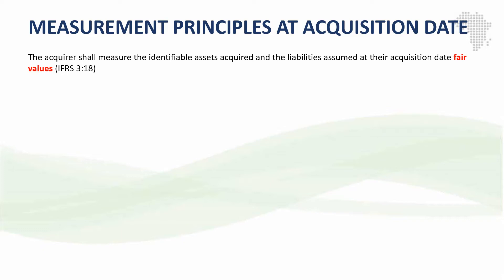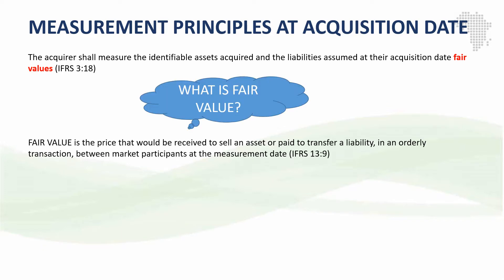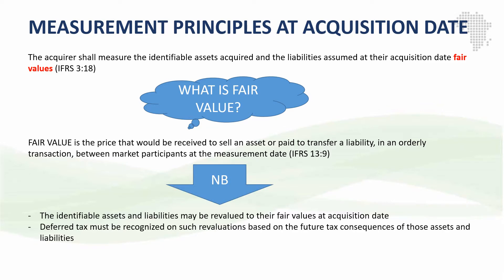The measurement principle in IFRS 3 says that the acquirer shall measure the identifiable assets acquired and the liabilities assumed at the acquisition date fair values. We know that fair value is defined in IFRS 13, and in simple terms it's the market value of the asset or liability. So at the date of acquisition, IFRS 3 requires us to measure all the assets and liabilities of the acquiree at fair value, and this implies that we may need to revalue some of our assets and liabilities. When we revalue them, those revaluations may also attract deferred tax depending on the future tax consequences of those assets and liabilities.